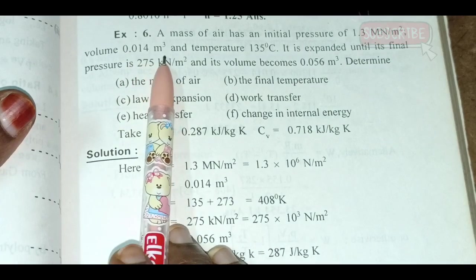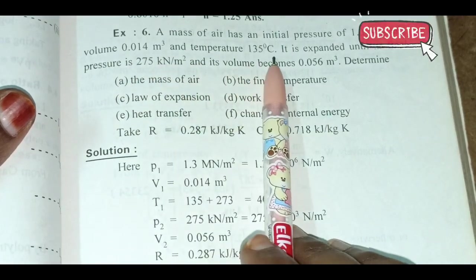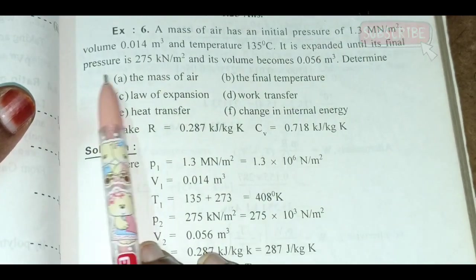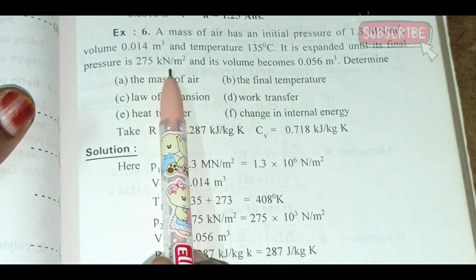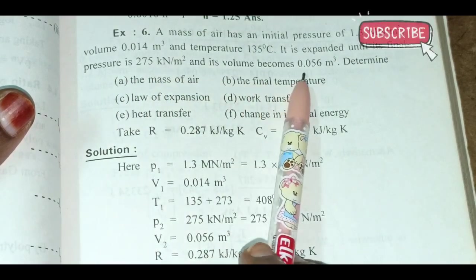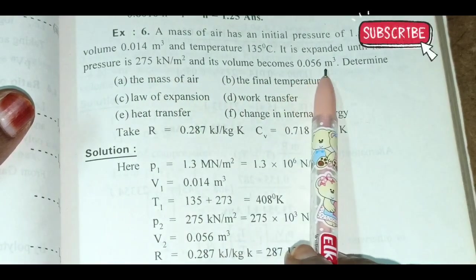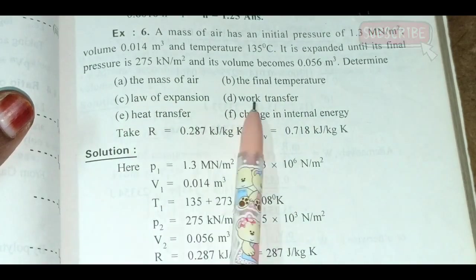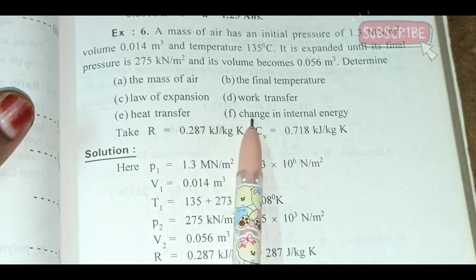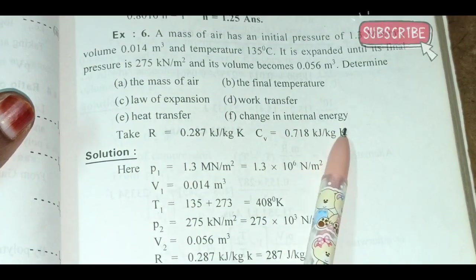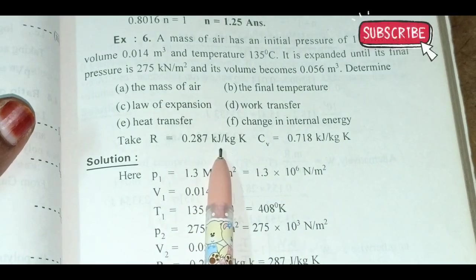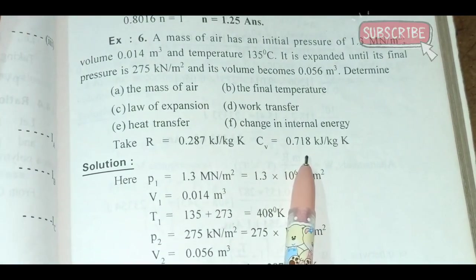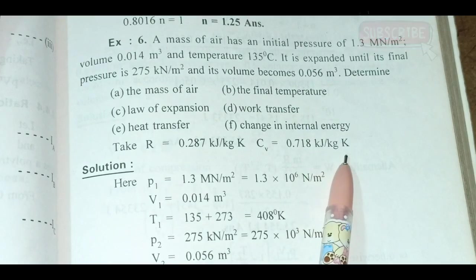The next problem: air at a temperature of 135°C is expanded until its final pressure is 275 kN/m² and its volume becomes 0.056 m³. Determine the mass of air, the final temperature, the law of expansion, work transfer, heat transfer, and change in internal energy. Given: R = 0.287 kJ/kg·K, Cv = 0.718 kJ/kg·K.